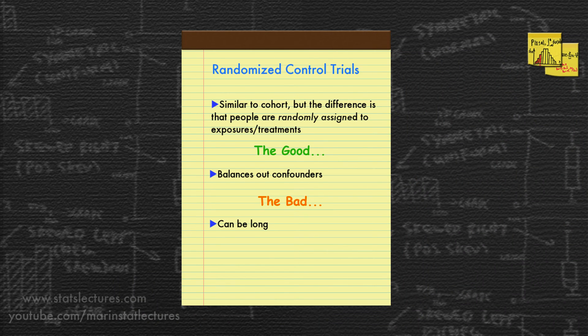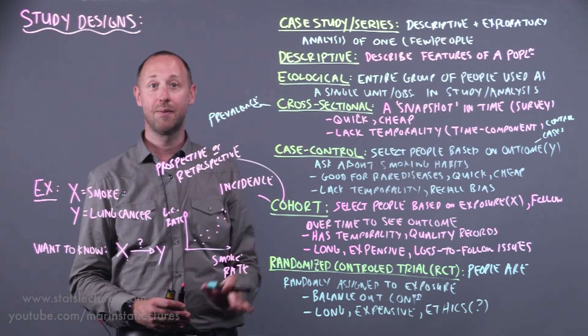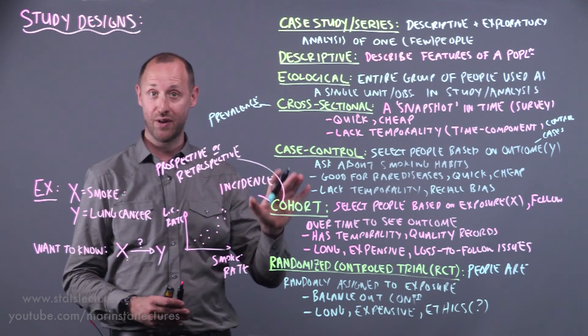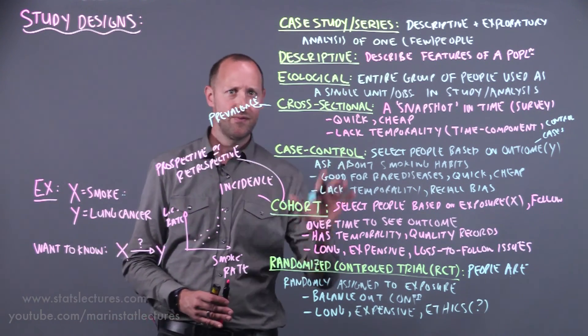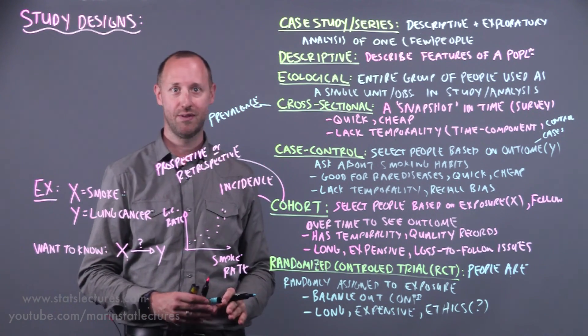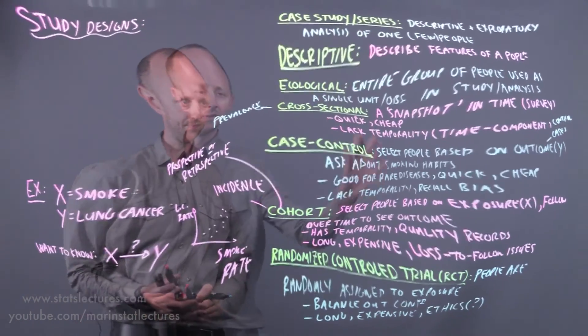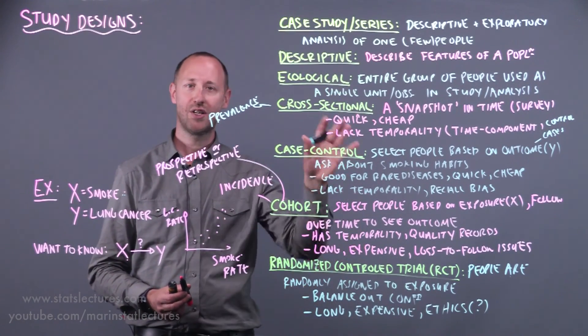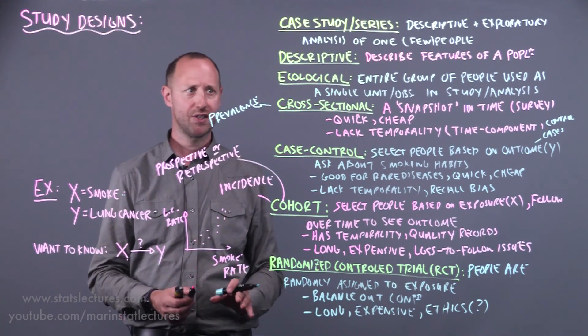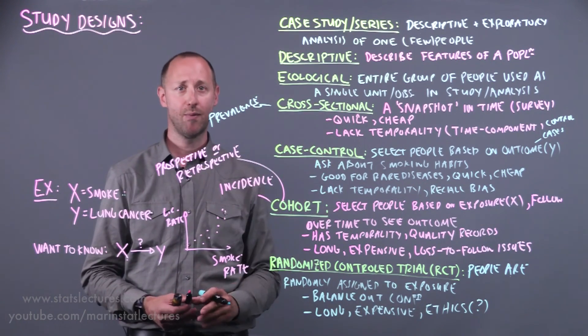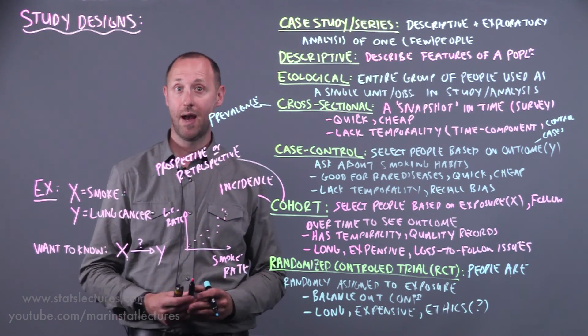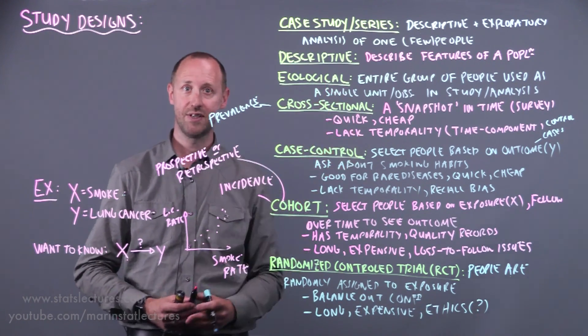Some of the negatives: it can be long, it can be expensive, and we have to think of ethics. In the observational designs, people are just living their lives, we're observing and recording data. There's far fewer ethical issues in terms of giving people treatments or not. This is a quick introduction or overview to the different study designs and we're going to start to lean on some of this understanding a bit more as we progress through analyzing data collected from these different designs.